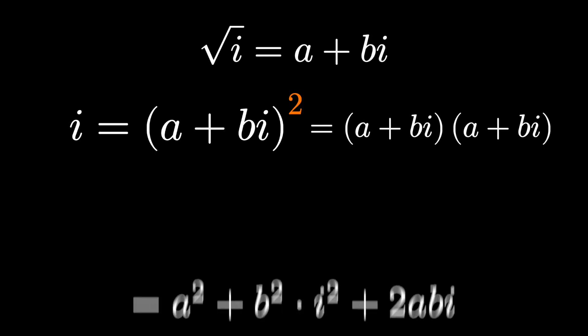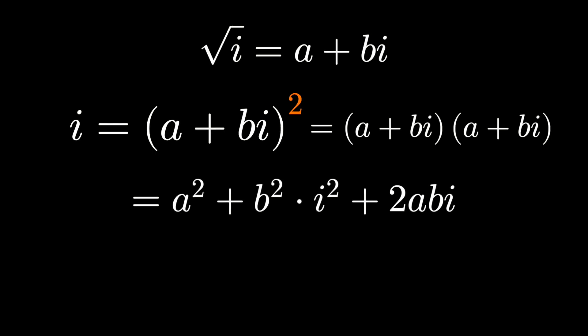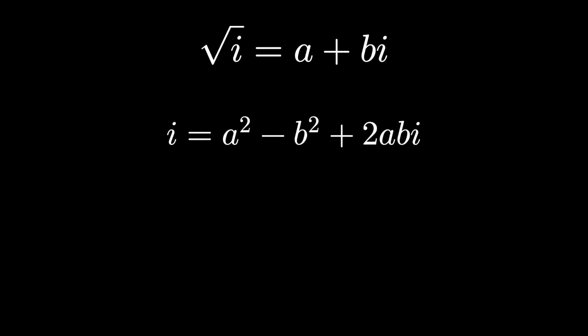We're going to get a times a is a squared. We'll get bi times bi is b squared i squared. But i squared is negative 1. And then we'd get a times bi happening twice.